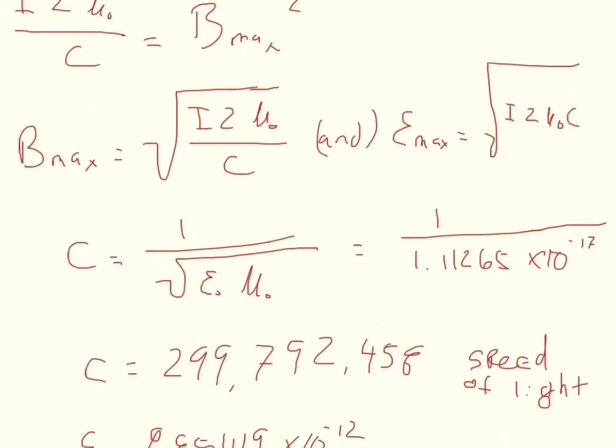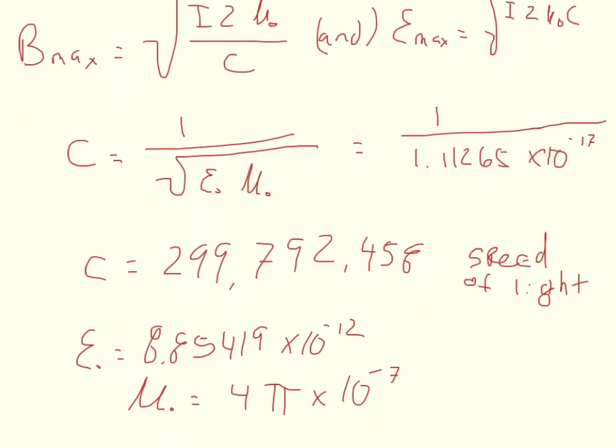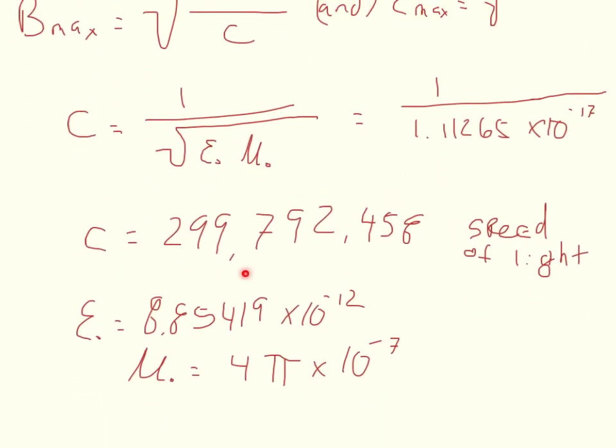And which C is equal to 299 million meters per second. And then of course if you want the other variables, E, the permittivity of free space, 8.8 times 10 to the negative 12th. The permeability of free space is 4 pi times 10 to the negative 7th.